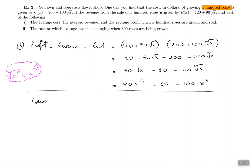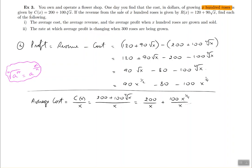Now let's find the average cost. The average cost, denoted C-bar of X, is the cost equation divided by X. In this problem that's 200 plus 100 times the fourth root of X, all divided by X. Breaking it down: 200 over X plus 100 X to the one fourth divided by X. Simplifying further using exponent rules, average cost equals 200 X to the negative one plus 100 X to the power of negative three quarters.